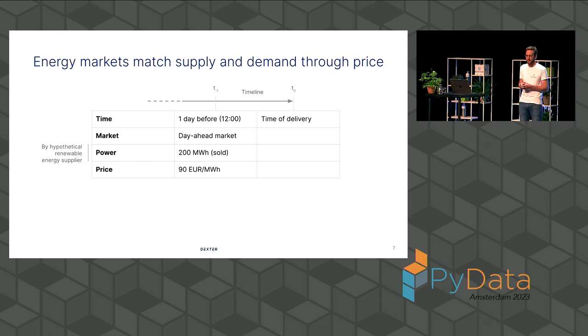You see here a timeline, T-1, one day in advance, at noon, renewable energy suppliers, where energy suppliers of any kind need to say what kind of power volume they think they'll generate. And then there's T-0, which is time of delivery. And whenever you sell there, it needs to be delivered at that time point. And we'll see in a moment what happens if you cannot deliver at that time point.